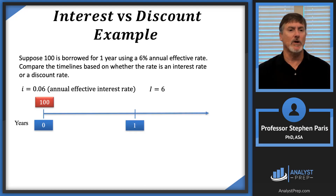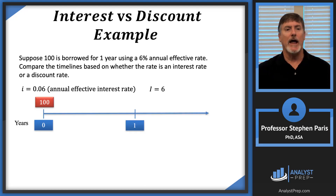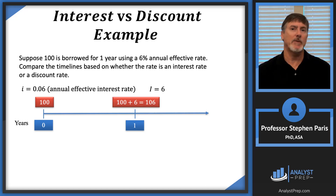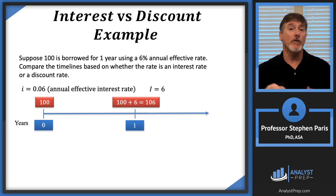So my timeline would look like this: I borrow $100 at time zero, and then at time one I'm going to have to pay back the $100 plus the interest of $6, so I'm going to have to pay back $106.